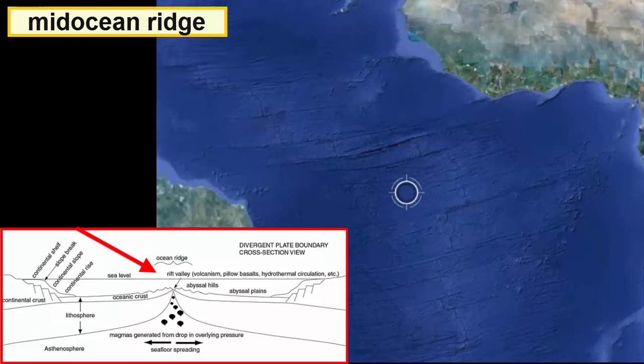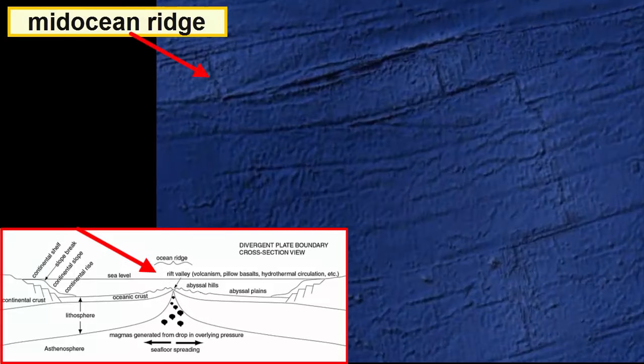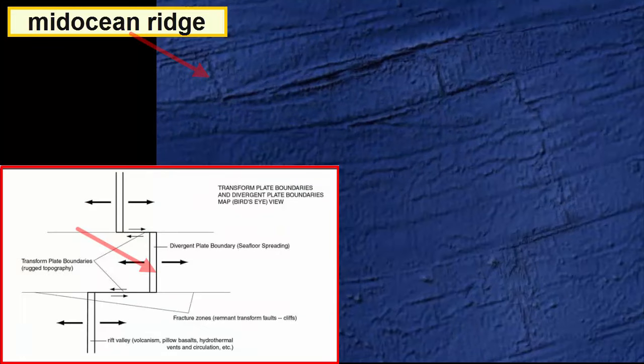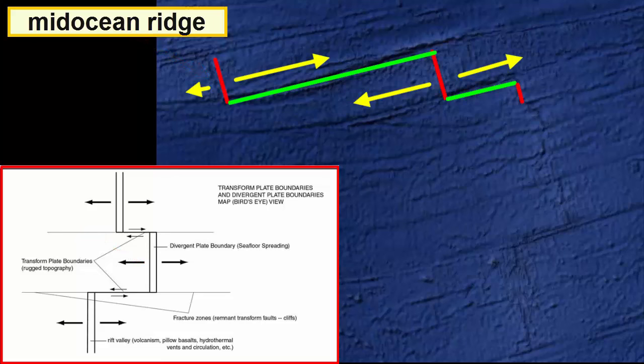At the center of the plate boundary, we see an ocean ridge with a central rift valley. We also see the ridges broken into segments, each offset from the one next to it by a transform boundary.